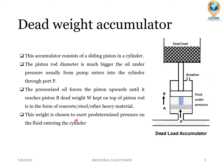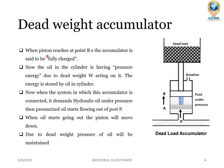This weight is chosen to exert a pre-determined pressure on the fluid entering the cylinder. According to the pre-determined pressure needed, the load is calculated and kept on the piston rod. When high pressure fluid comes in, it forces the piston to move up, from position A to position B. When the piston reaches point B, the accumulator is said to be fully charged.